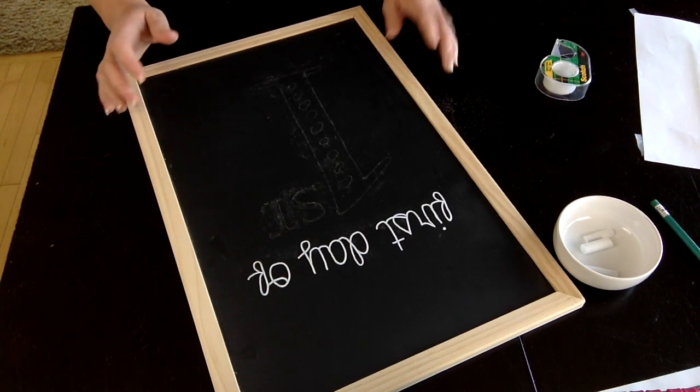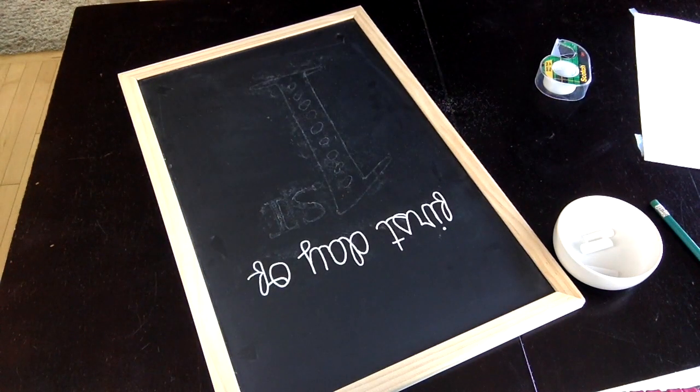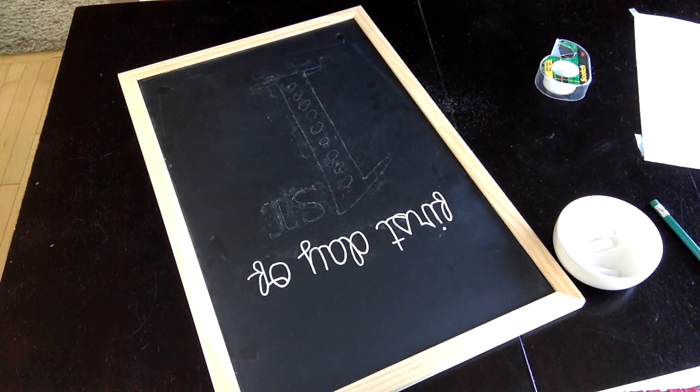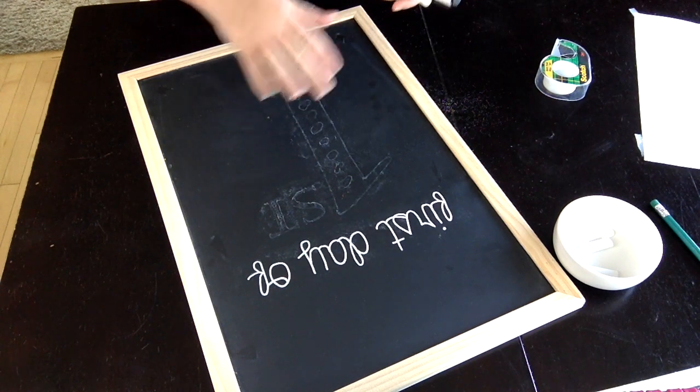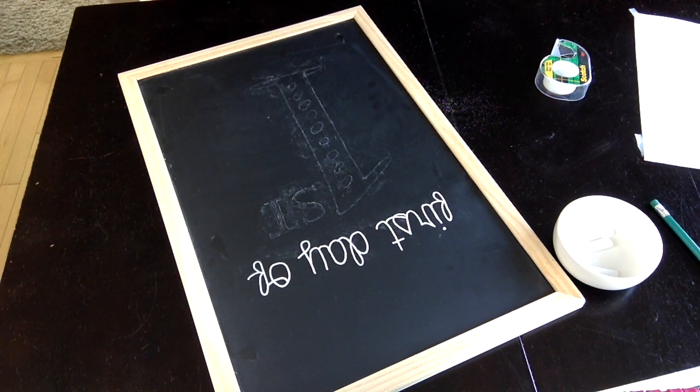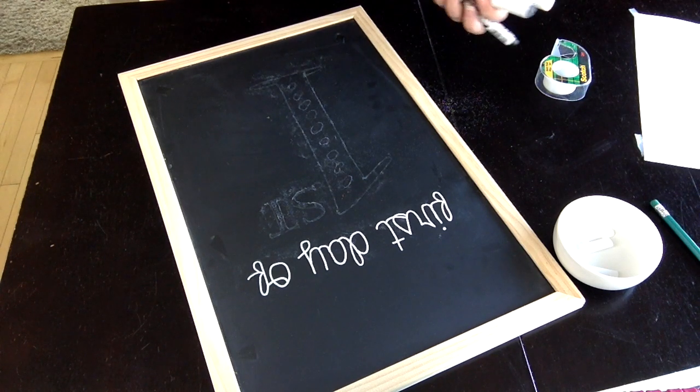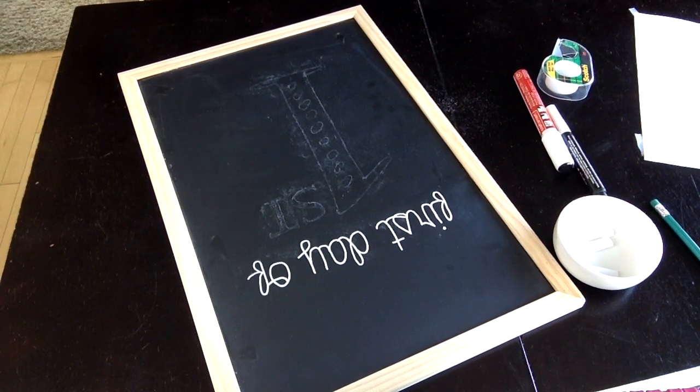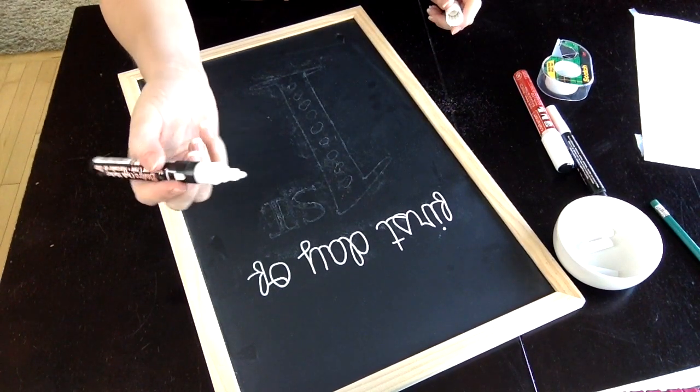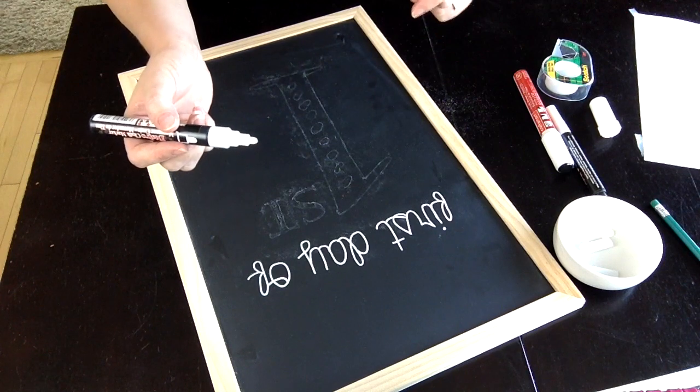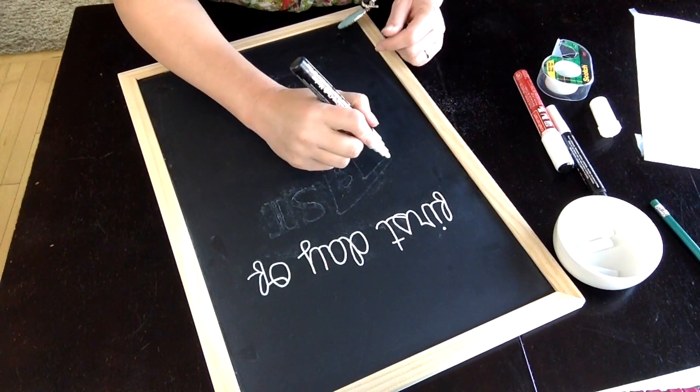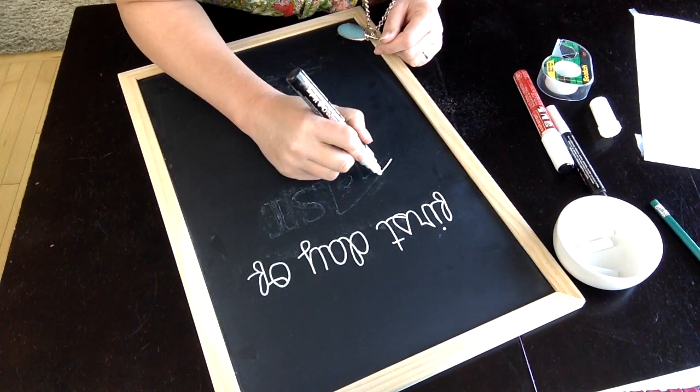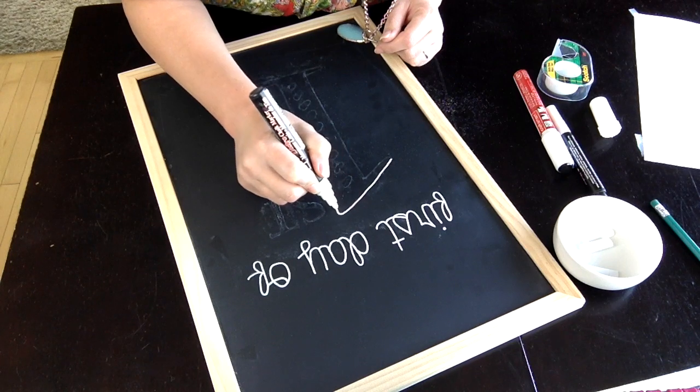There's a few different options for chalk pens. You could actually just use a piece of chalk for this, but I really like to use an actual chalk marker. I'm going to start with one that has kind of a medium-sized round tip versus one that has a chisel tip. The chisel tip chalk pens are a little trickier to work with.